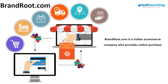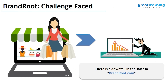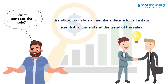There is a brand called Brandroot.com — basically an Indian e-commerce company that provides online purchasing. They started facing a problem: they saw a drop in their sales, but they were not able to find out the reason. They were concerned about how to increase sales and what the parameters were, as sales were directly dropping. So the board members of Brandroot.com decided to call a data scientist to understand the sales trend and find the parameters to increase their sales.